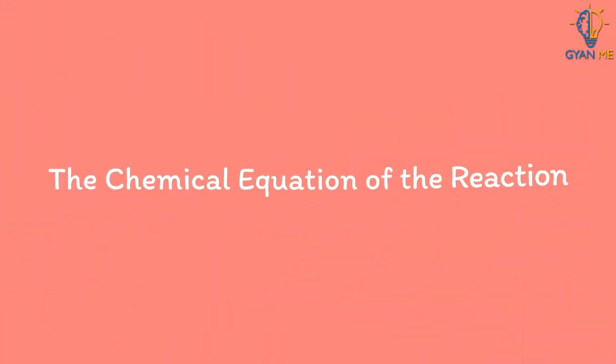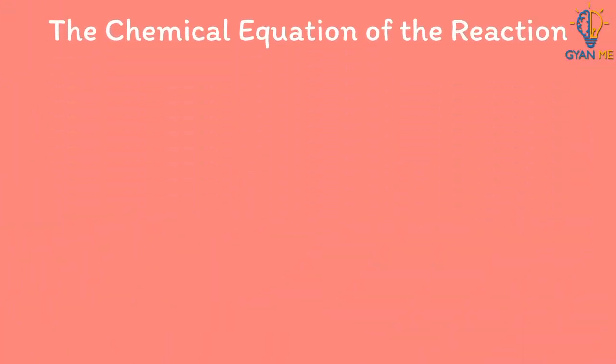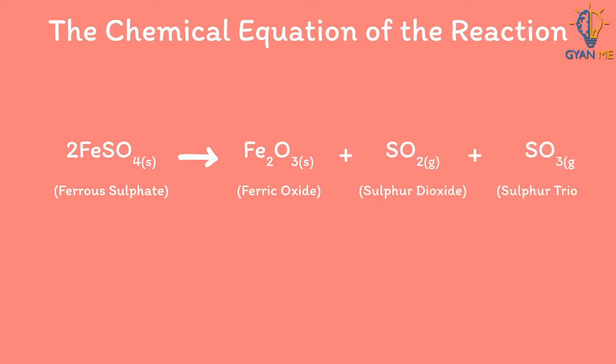Let us see the chemical equation of the reaction for this. In the chemical equation, FeSO4 is decomposing into ferric oxide plus sulphur dioxide plus sulphur trioxide.